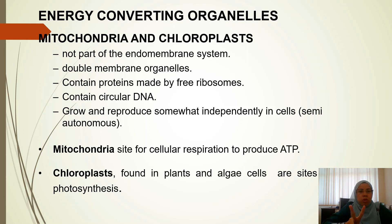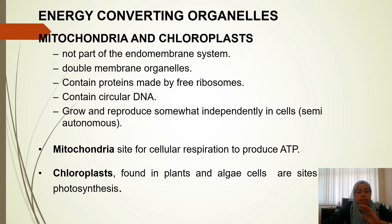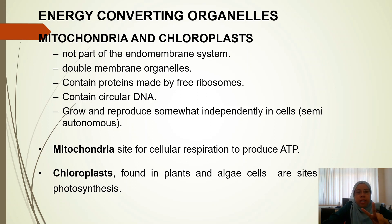These are our two organelles: mitochondria and chloroplasts. What is special about mitochondria and chloroplasts is they are known as energy-converting organelles or semi-autonomous. Being semi-autonomous means they can grow and reproduce independently inside the cell. These two organelles are not part of the endomembrane system.